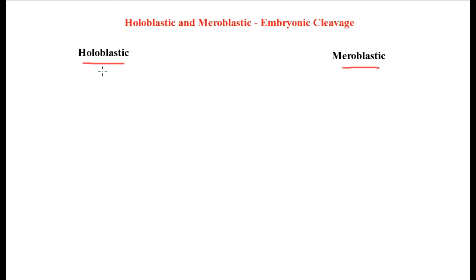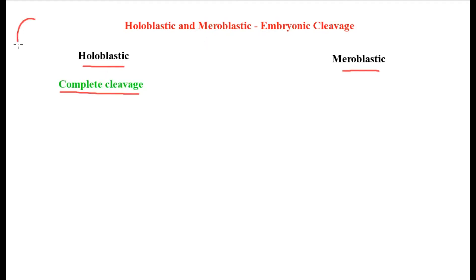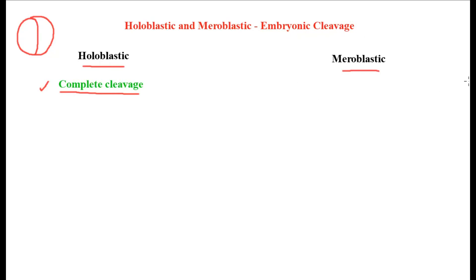Holoblastic cleavage is a type of cleavage where the cleavage completely takes place in the egg — it's a complete cleavage. Meroblastic cleavage, on the other hand, is incomplete or partial cleavage — it does not take place completely. The reason complete versus incomplete cleavage occurs in the egg is because of the yolk content present in the egg.